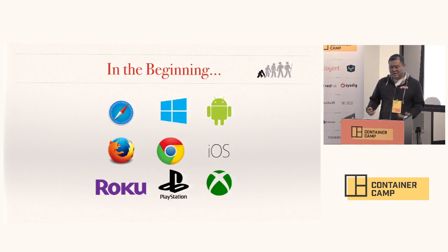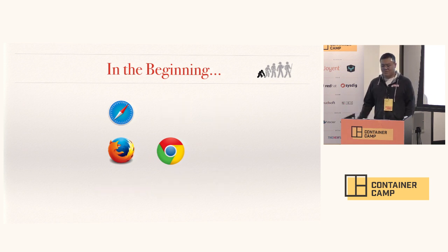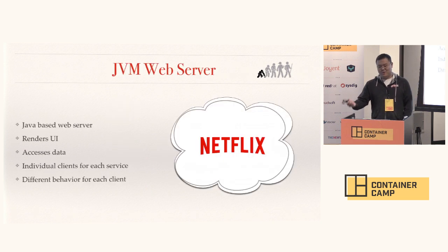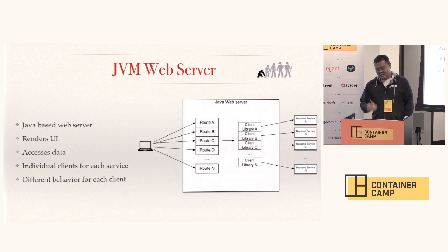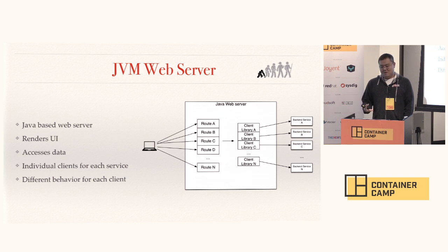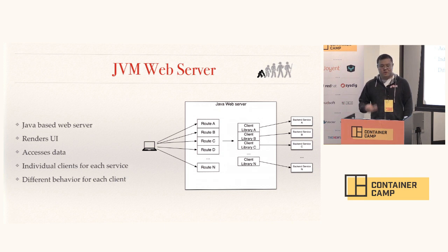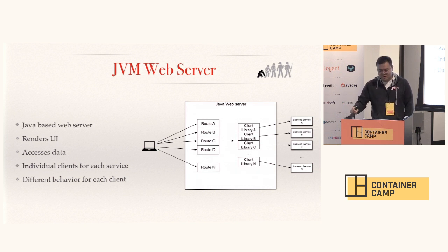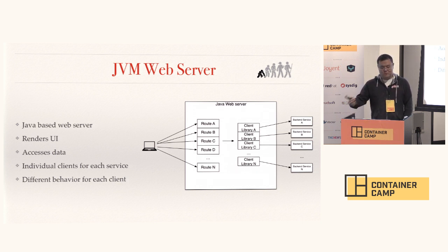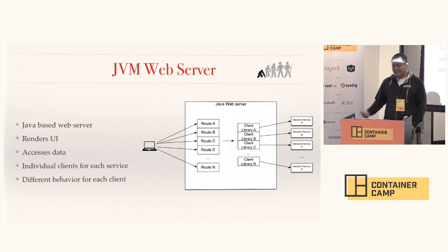One of the biggest things with Netflix is we let you watch on any device, anywhere. But in the beginning, all we had were browsers. What we had was a vanilla JVM-based web server inside the cloud. We had a web server that would render all of our UI to the browser, and then client jars that we'd incorporate into the web server to hit the multitude of our backend microservices — something we're really well known for. Each service had different behaviors we could leverage using a specific client, and it both rendered the UI and accessed the data.